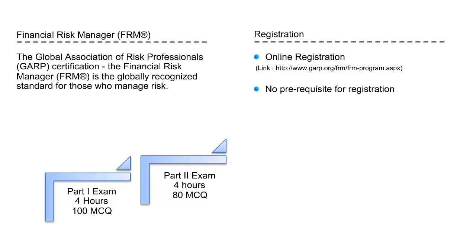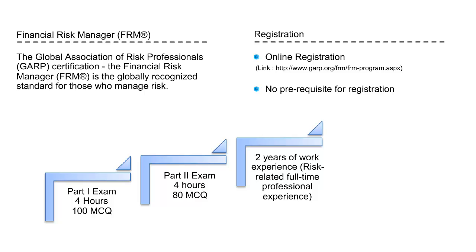After passing both parts of the FRM exam, a candidate must satisfy a work experience requirement to become certified and start using the FRM designation. FRM candidates must demonstrate a minimum of two years of professional full-time work experience in the area of financial risk management or another related field, including but not limited to trading, portfolio management, faculty or academic research, economics, auditing, risk consulting, and/or risk technology.